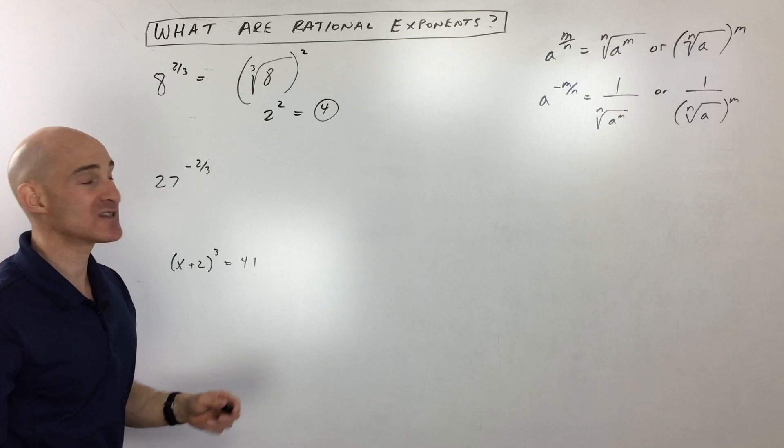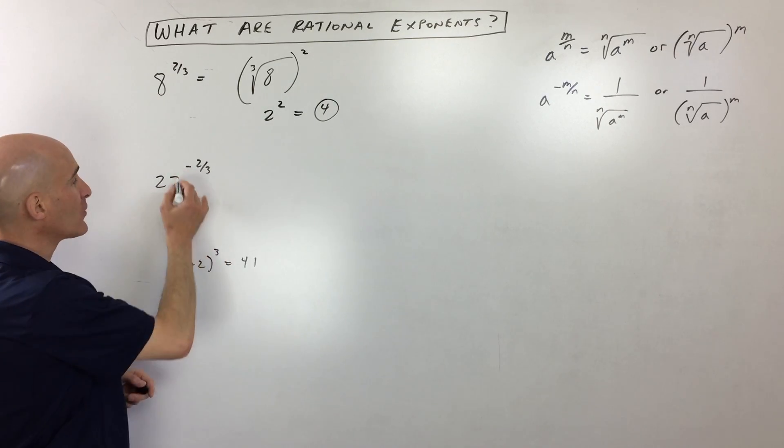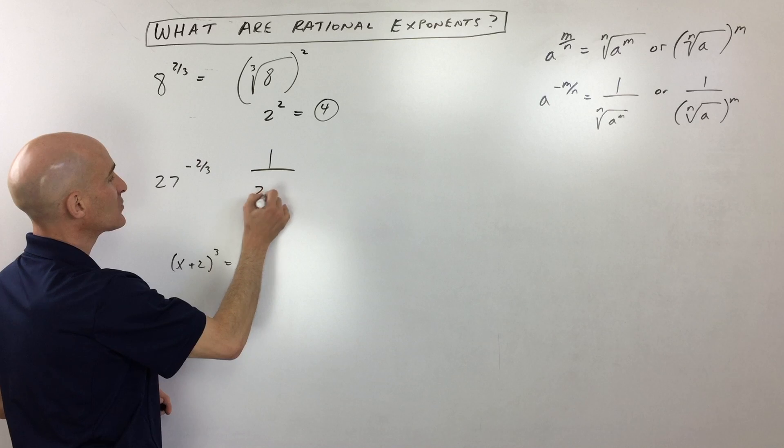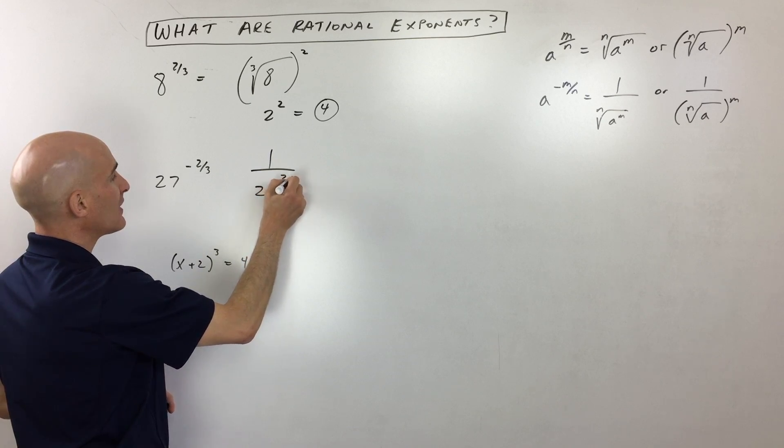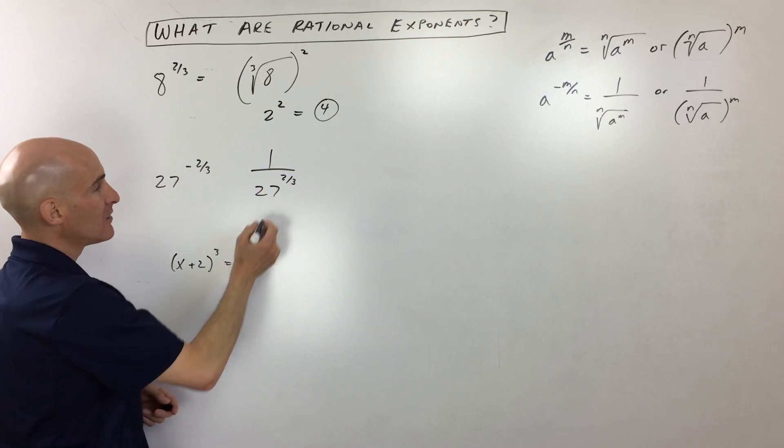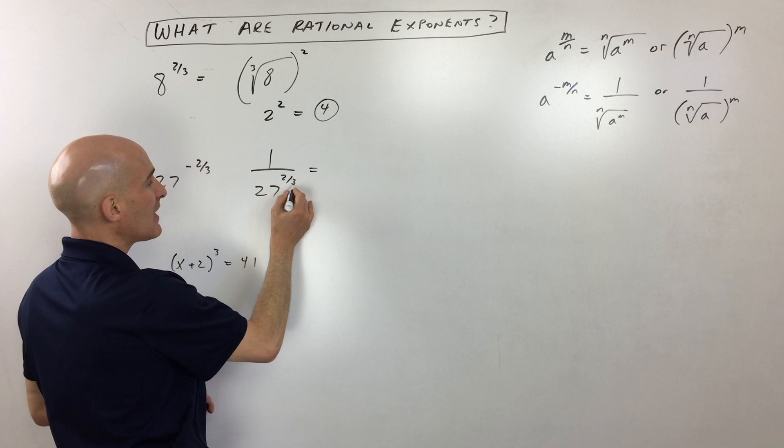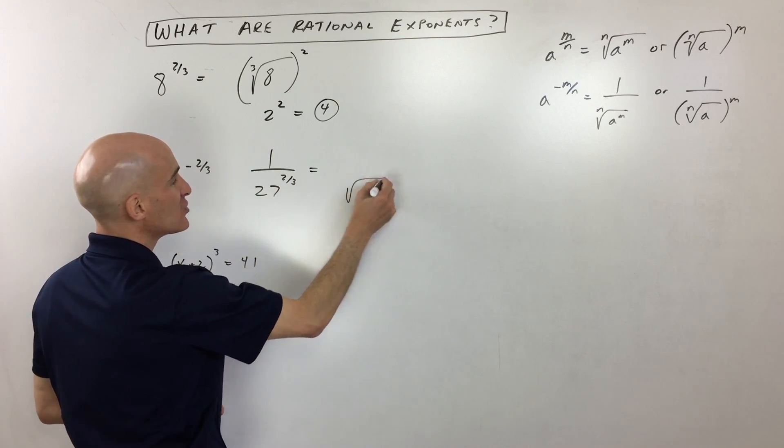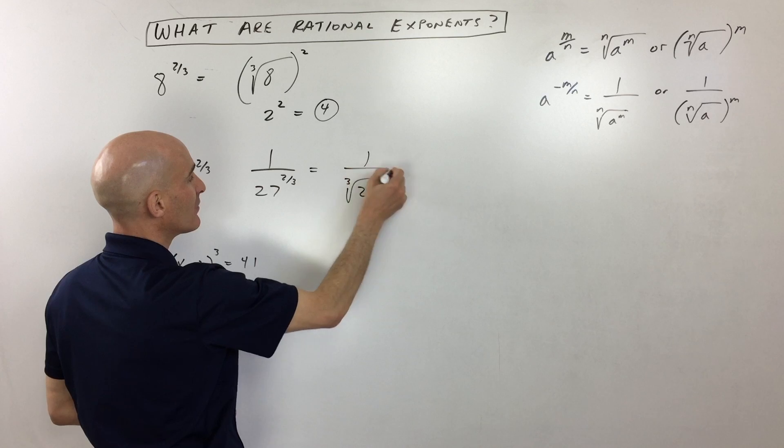Let's look at another example. 27 to the negative 2/3. See that negative? That negative says take the reciprocal, and then raise it to the positive 2/3. Now again, that denominator, see that 3, that means the cube root of 27, right?